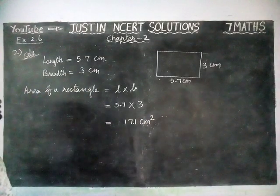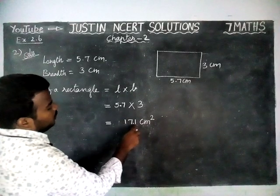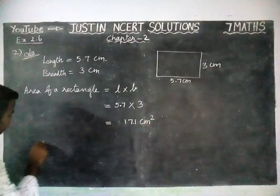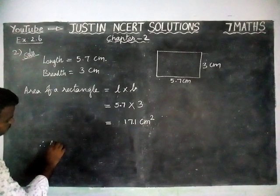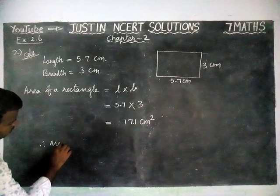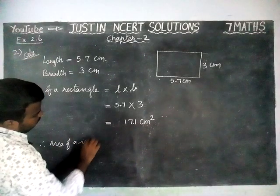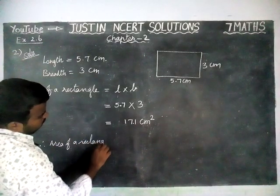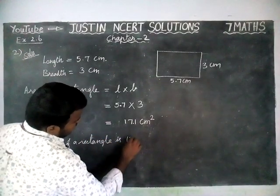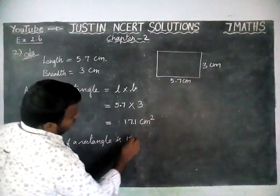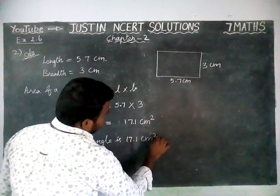Because this is area — area of a rectangle — so 17.1 cm squared. Therefore, area of a rectangle is 17.1 cm squared.